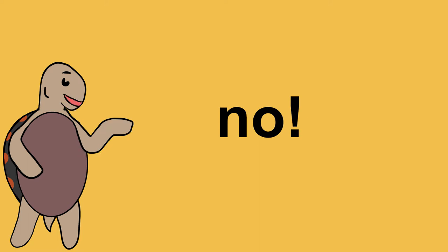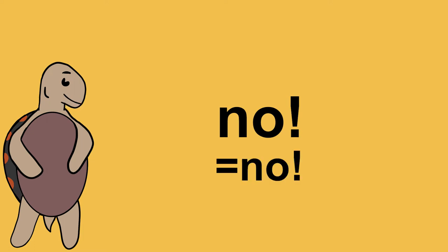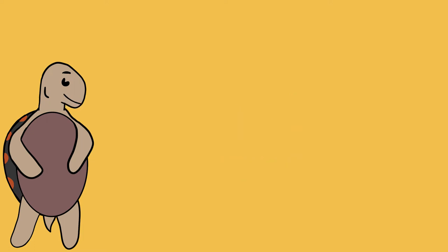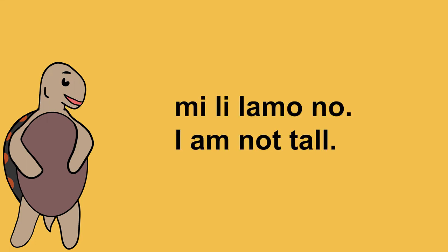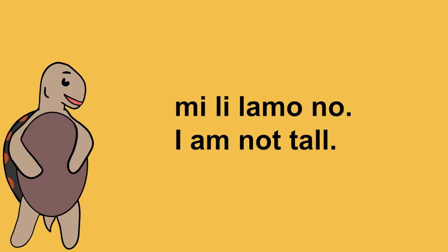The word 'no' conveys negation. Used as an interjection, 'no' means the same as it does in English: no. 'No' can also be used as a modifier. For example, 'me li la mono' means 'I am not tall.' So negations work by putting 'no' behind the word you want to negate.